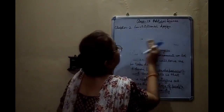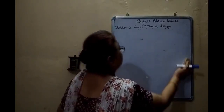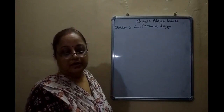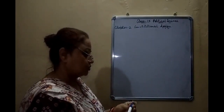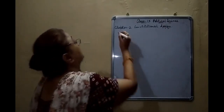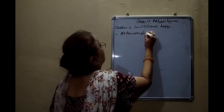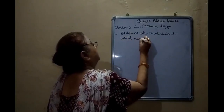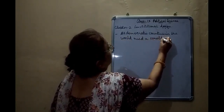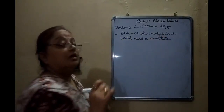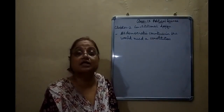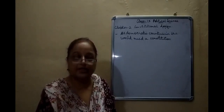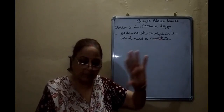It is important to understand that if we have a constitution, what are the things people need to keep in mind? Even in non-democratic countries — if there is a king — do the rulers not have rules and regulations? They also make a constitution and people have to follow it.